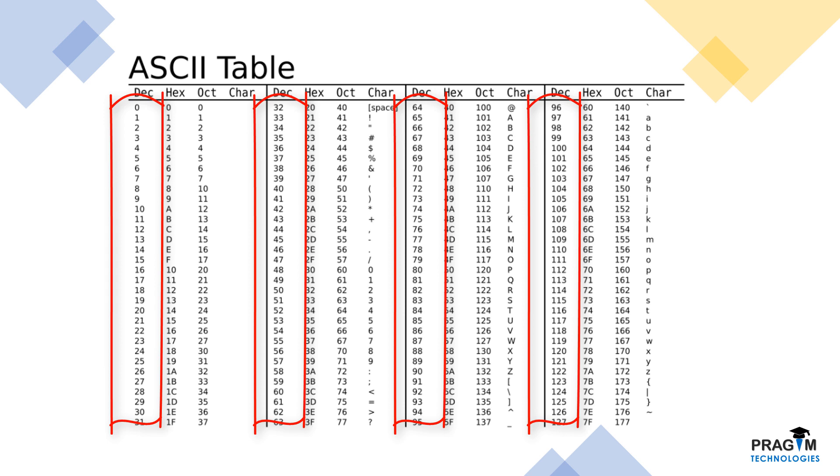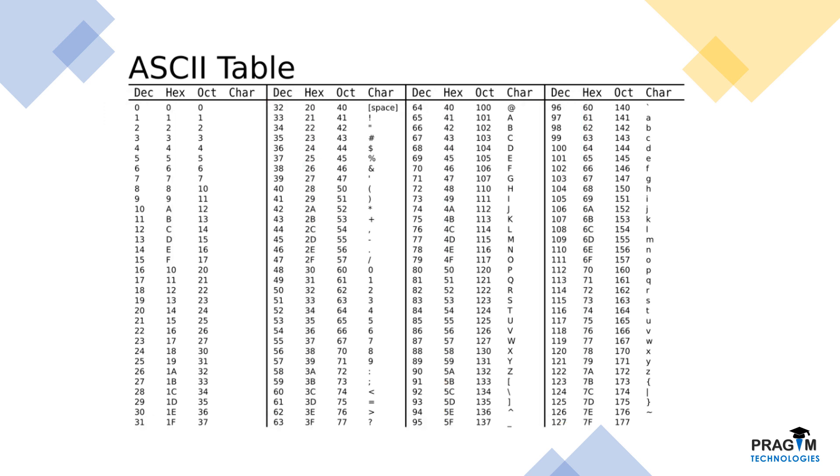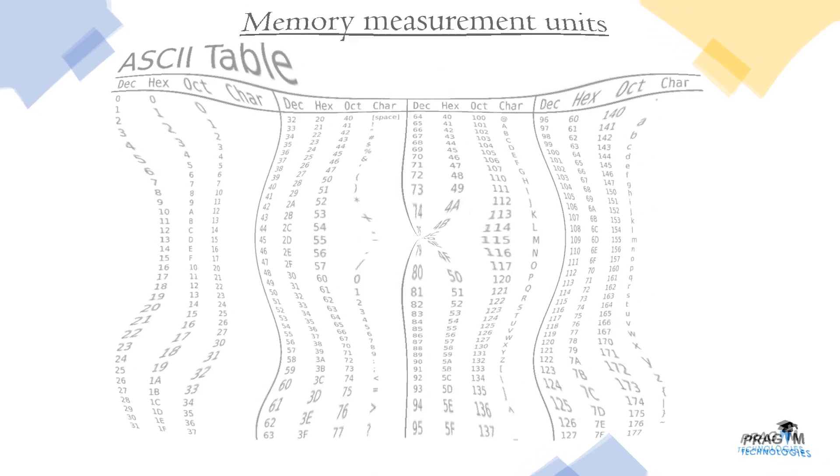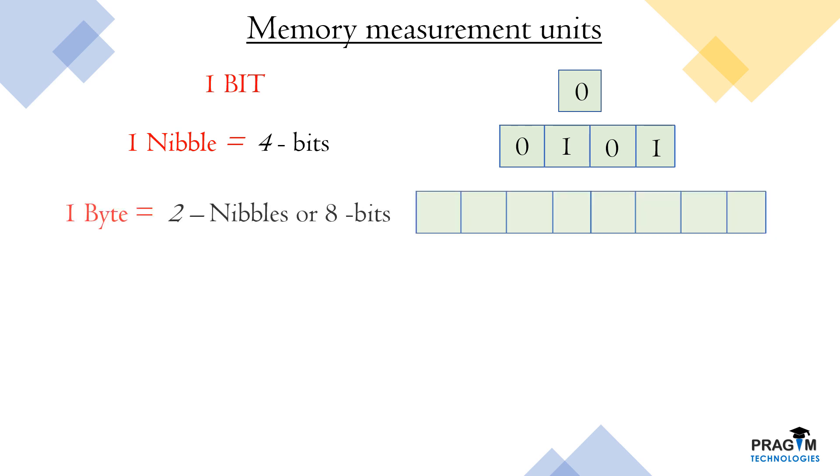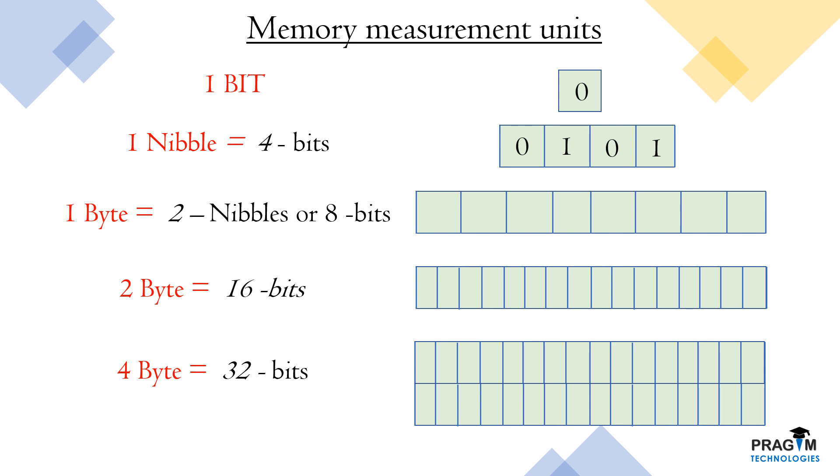Before winding up this session, I would like to show you some basic memory measurement units that are really required to understand about data types. In computer memory, each bit can hold one binary value, whether 0 or 1. And one nibble equal to 4 bits. So, we can able to store 4 bits of information in this nibble. And one byte equal to two nibbles or 8 bits. Similarly, 2 bytes equal to 16 bits and 4 bytes equal to 32 bits. This information is sufficient to proceed with our next session.